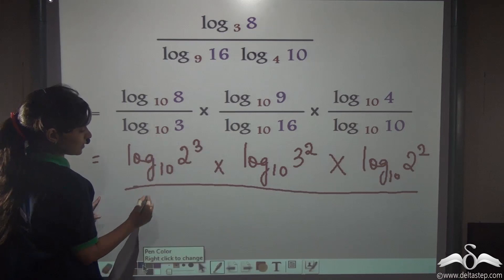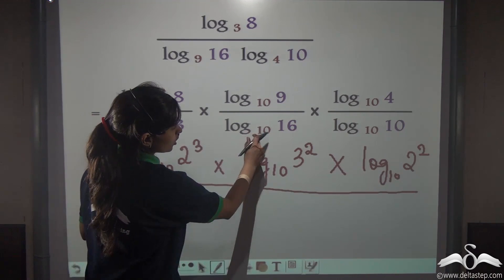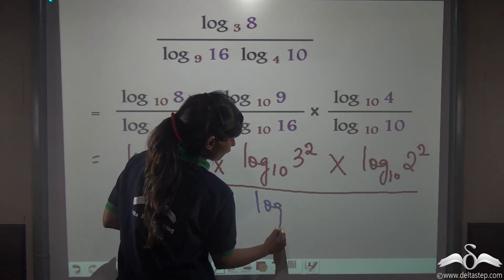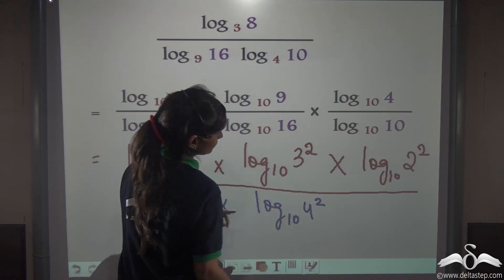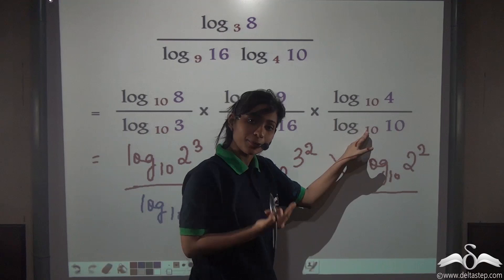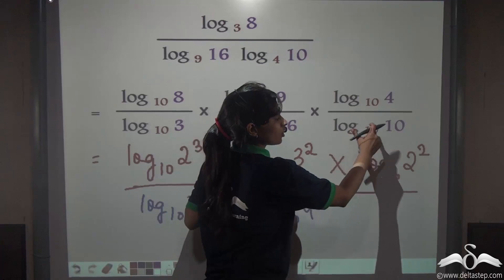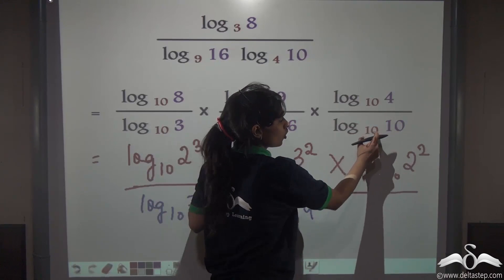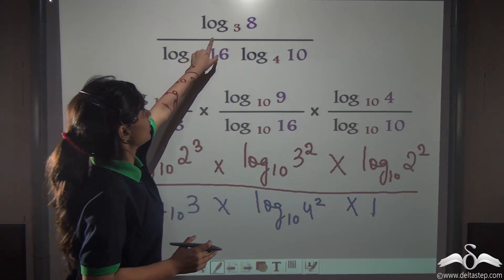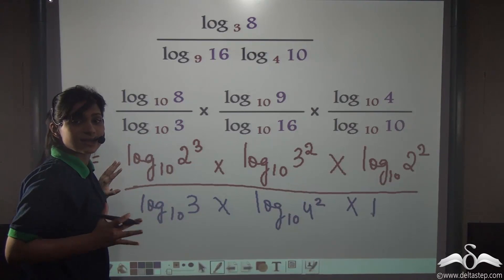Log 3 to the base 10 will remain as it is. Log 16 to the base 10 — 16 is 4 squared, so log 4² to the base 10. And log 10 to the base 10 — remember from our previous lectures, we have studied that log A to the base A is always 1, because 10 to the power 1 is 10. So the answer here will be 1. Now all the bases are the same, which will ease our work.